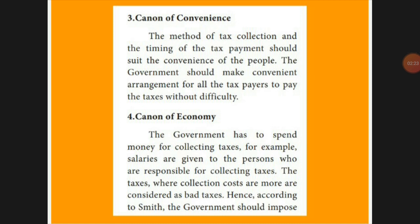Next is the Canon of Economy. Canon of Economy means when collecting a tax, there should be some staff or employees responsible for collecting it, and the government has to pay their salary. Taxpayers can go and give the tax to that person, who will pass it to the government. To conclude, Adam Smith says the Canon of Taxation should ensure that whatever tax the government is collecting should be very less and cheap.